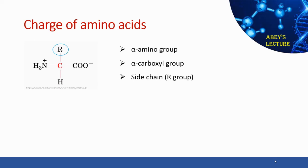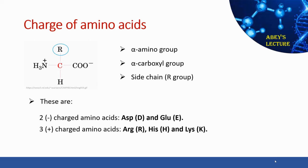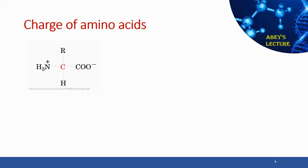There are 7 out of 20 amino acids that have ionizable side chains: the 2 negatively charged amino acids aspartic acid and glutamic acid; the 3 positively charged amino acids arginine, histidine, and lysine; and 2 polar uncharged amino acids cysteine and tyrosine. The remaining 13 amino acids do not have ionizable side chains, so their charge contribution comes only from the alpha amino group and the alpha carboxyl group.